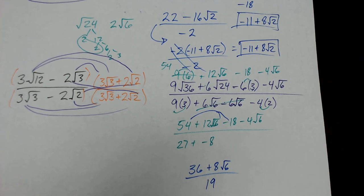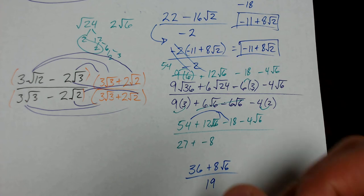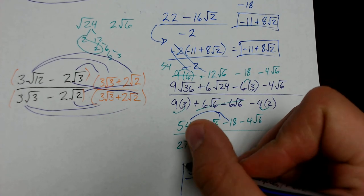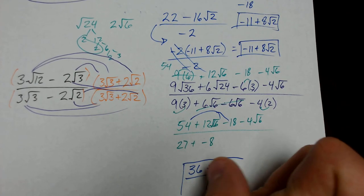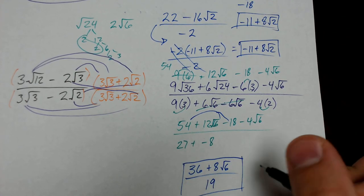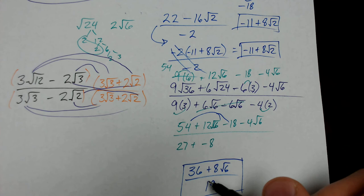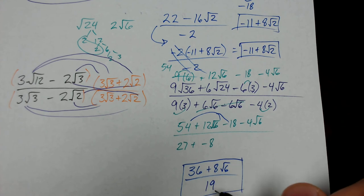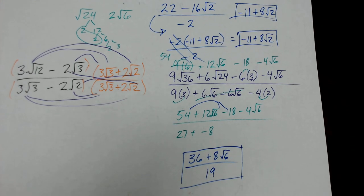That is our final answer: (36 + 8 root 6) / 19. There's no more simplification we can do because although 36 can be divided by 19, 8 cannot. That's it for this lesson. If you have any questions, let me know on Moodle and I will see you in class.